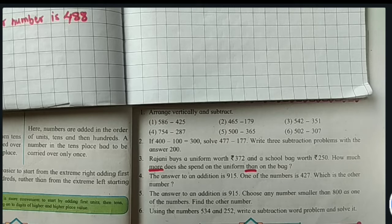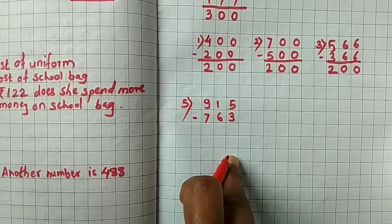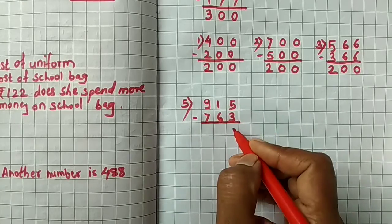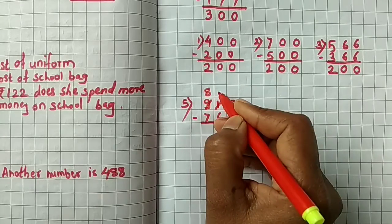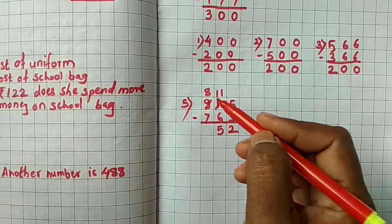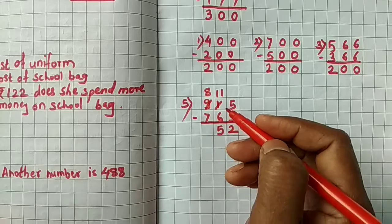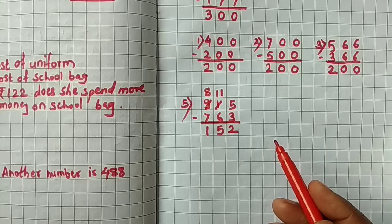Question number 5. The answer to an addition is 915. Choose any number smaller than 800 as one of the numbers. Find the other number. I am choosing this number 763 is less than 800. Now we are doing subtraction. 5 minus 3 we get as 2. 1 minus 6 it is not possible, that's why we are taking borrowing. So here 8, here it becomes 11. 11 minus 6, 5 is there. Next, 8 minus 7, how many get as? Yes, 1. Next number is, means another number is 152.